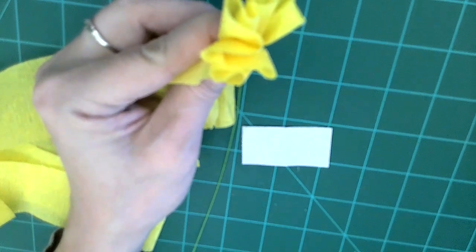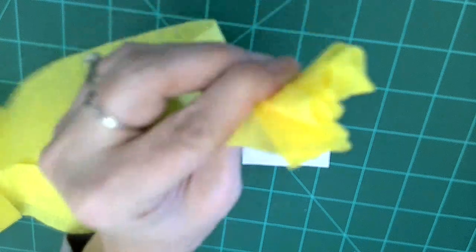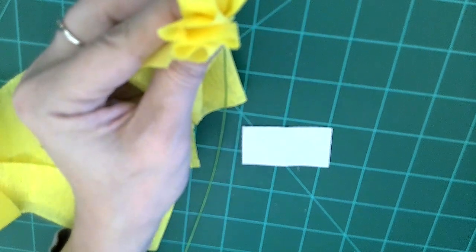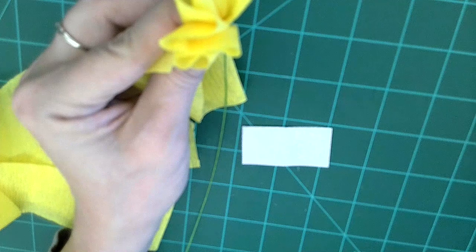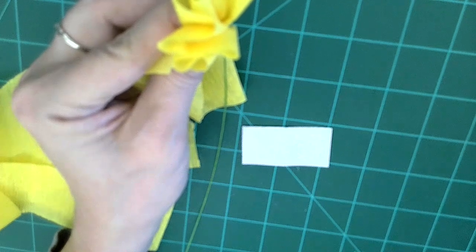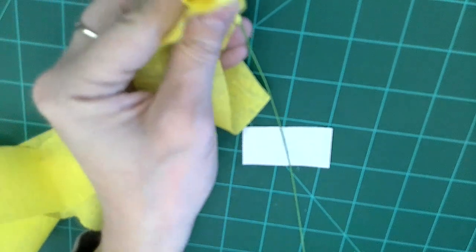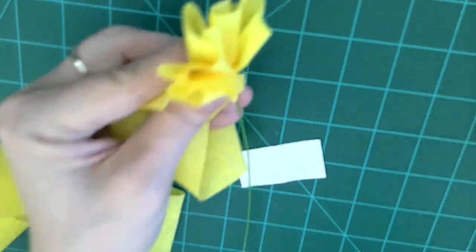You want to be sure that as you are working with the Crepe Paper Streamer it doesn't go too far down on the floral wire. You just have to be careful that you keep putting it up so that it doesn't go too far down the shaft of the floral wire.